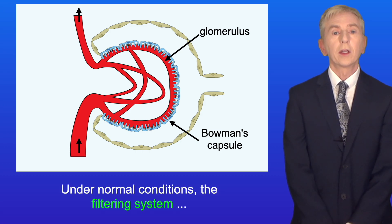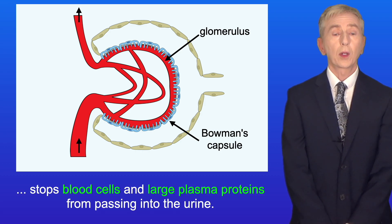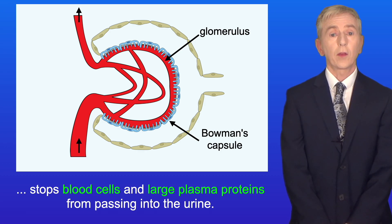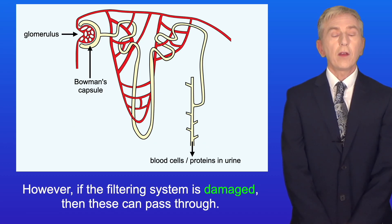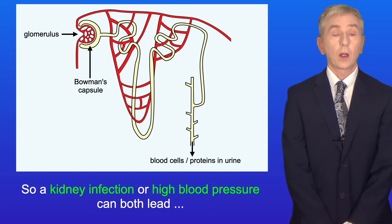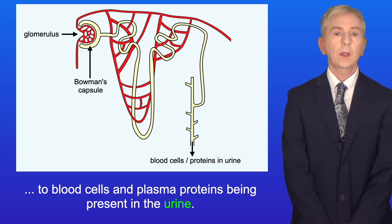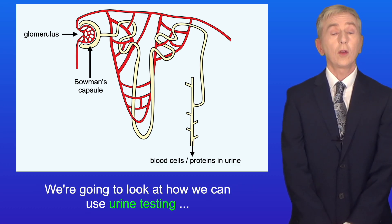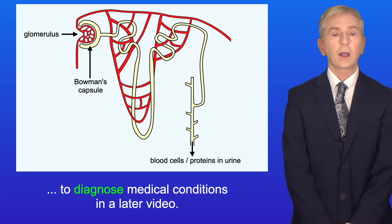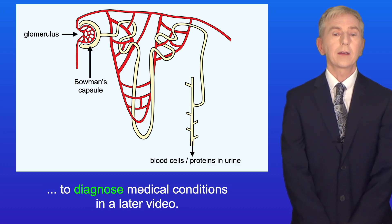Under normal conditions, the filtering system stops blood cells and large plasma proteins from passing into the urine. However, if the filtering system is damaged, then these can pass through. So, a kidney infection or high blood pressure can both lead to blood cells and plasma proteins being present in the urine. We're going to look at how we can use urine testing to diagnose medical conditions in a later video.